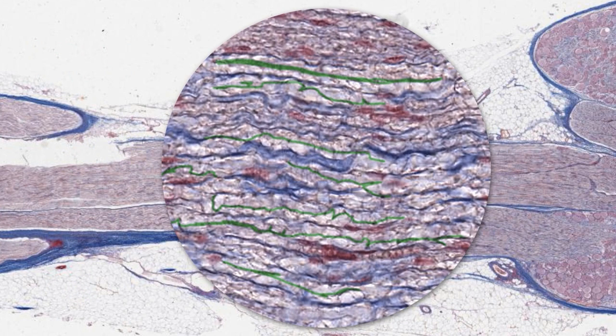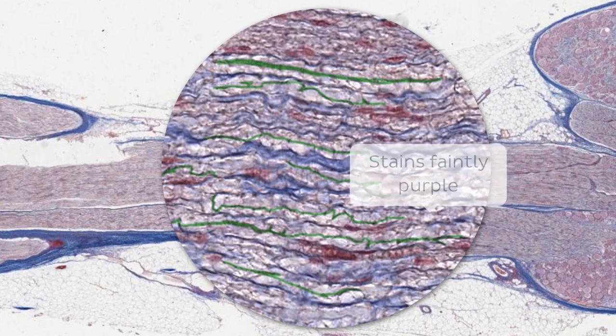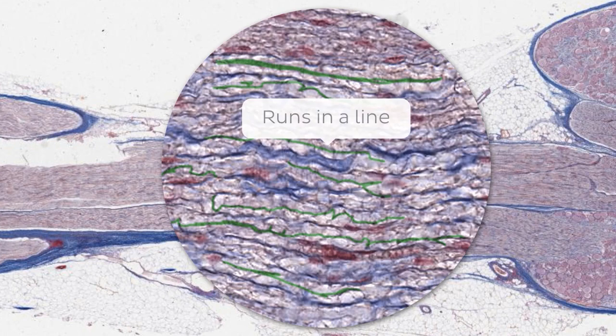And the green highlight gives the game away a little bit, but if you need to identify an axon on an image like this, there are a few things to look out for. One, the axon stains faintly purple on H&E. Two, it runs in a line along the length of the nerve.